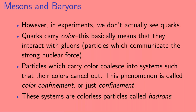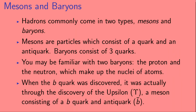However, in experiments, we don't actually see quarks. Quarks carry color, which basically means that they interact with gluons — the particles which communicate the strong nuclear force. Particles which carry color coalesce into systems such that their colors cancel out; this phenomenon is called color confinement. These systems are colorless particles called hadrons. Hadrons commonly come in two types: mesons and baryons. Mesons consist of a quark and an anti-quark; baryons consist of three quarks. You may be familiar with two baryons, the proton and the neutron, which make up the nuclei of atoms.